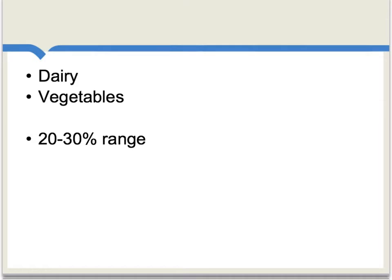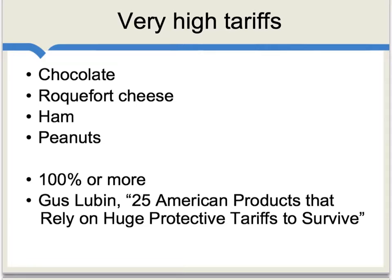In the United States, products such as dairy and vegetables tend to have published tariffs in the range of 20–30%. Some U.S. agricultural products have very high published tariffs — over 100% in some cases — and those would include chocolate, some kinds of cheese, ham, and peanuts.